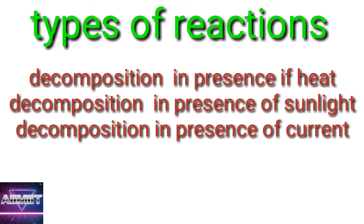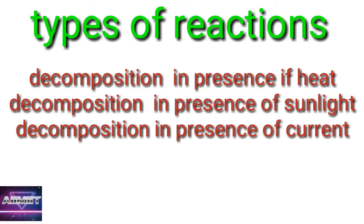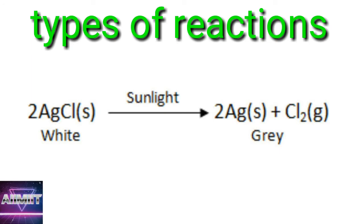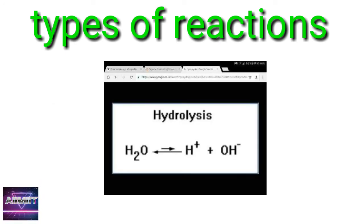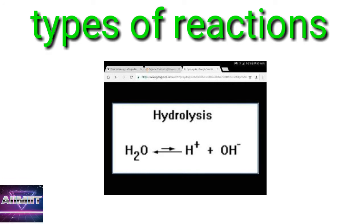Under decomposition by heat: (1) CaCO₃ → CaO + CO₂; (2) lead nitrate on heating gives lead oxide, nitrogen dioxide gas, and oxygen gas. Under decomposition by sunlight — also called a photographic reaction: 2AgCl → 2Ag + Cl₂. Under decomposition by electric current: 2H₂O → 2H₂ + O₂. Since hydrogen is a positive ion, it is liberated at the cathode, and oxygen is liberated at the anode.